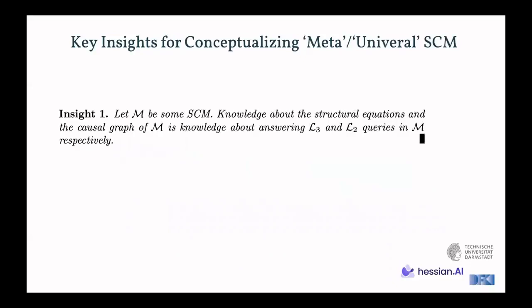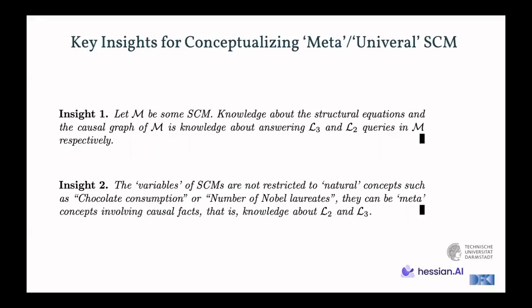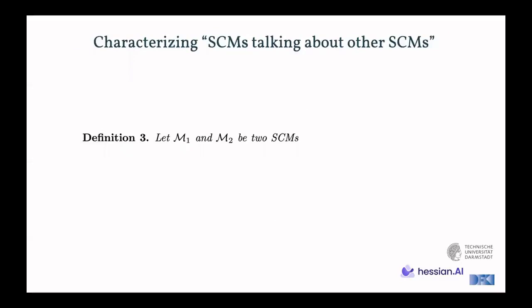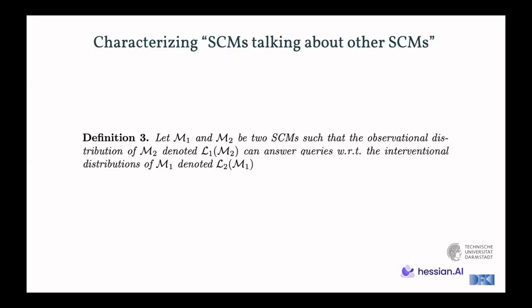So as a final stretch to this talk, the key intuition for the mathematicalization of the idea. Again, all the details in the full paper. So the first one for getting these meta, or what we call universal SEM, is that if M denotes some SEM, the knowledge about structural equations and the causal graph of M is actually knowledge about answering L3 and L2, so counterfactual interventional queries for M. Another important insight is that, again, these variables of these SEMs are not restricted to natural concepts, such as chocolate consumption. They can be meta, in the sense that they can contain knowledge about other SEMs that answer questions about L2 and L3. So to now characterize this meta SEM, let M1 and M2 denote two structural causal models, such that the observational distribution of the second model, denoted by this L1 operation on M2, can answer queries with respect to the interventional distribution of the first model, denoted L2M1. Then such an M2 would be called meta, with respect to this first model. And the key part is answering queries about.